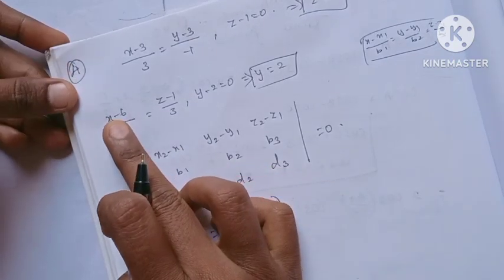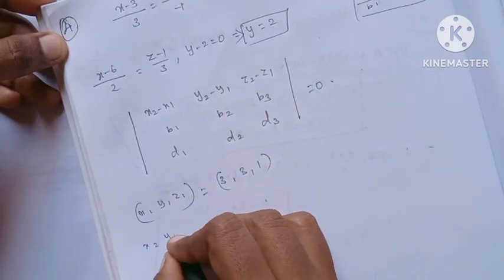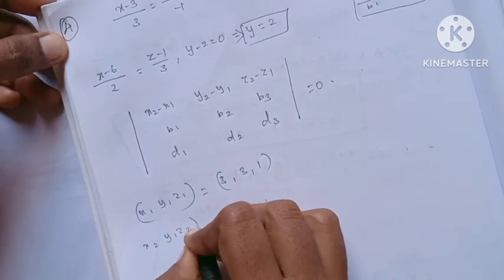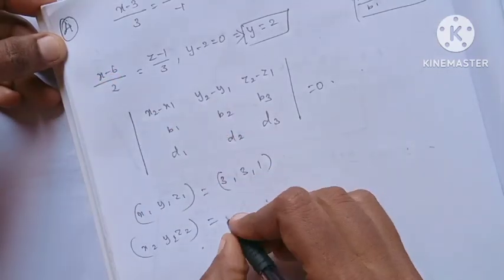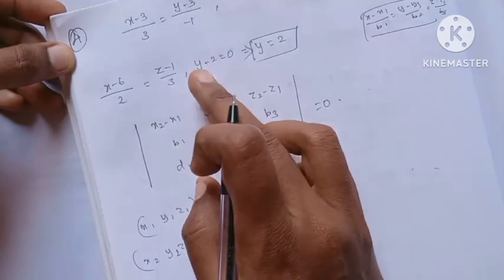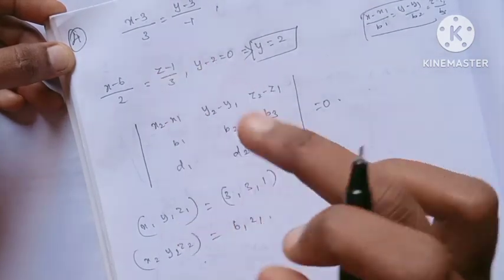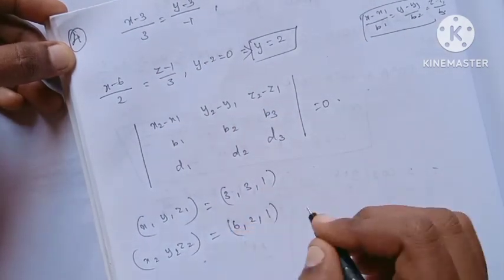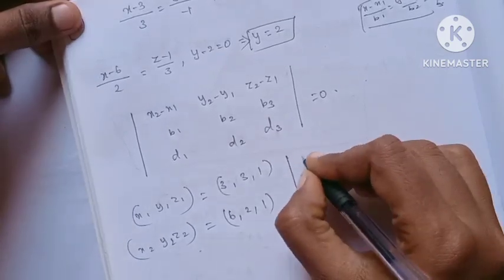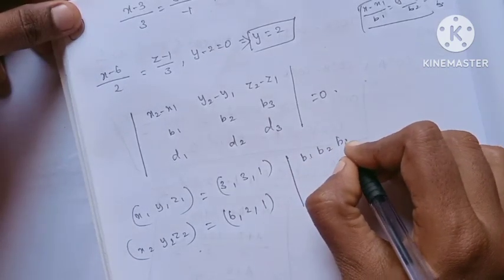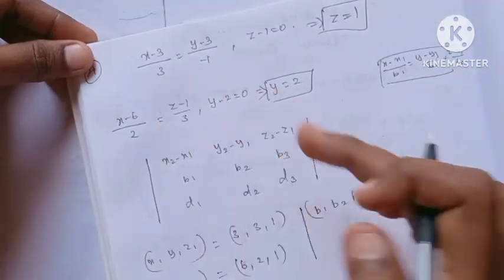For the second line, x2 is 6, y2 is 2, z2 is 1. The direction vector b1, b2, b3 for the first line is 3, minus 1, 0, and for the second line, d1, d2, d3 is 2, 0, 3.